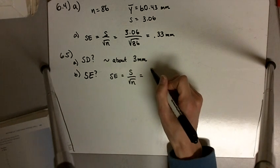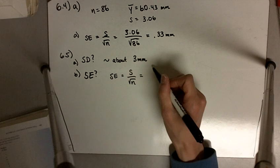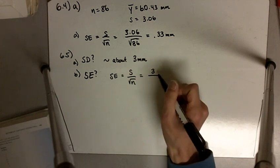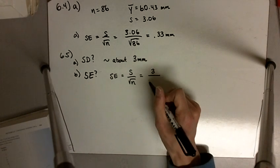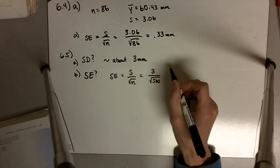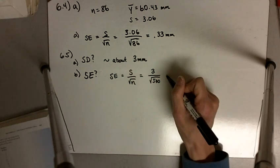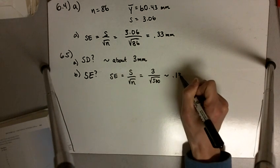So in this case, we're going to have something close to 3 millimeters, that's what we're estimating to be our standard deviation, divided by the square root of 500. So something close to about 0.13 millimeters.